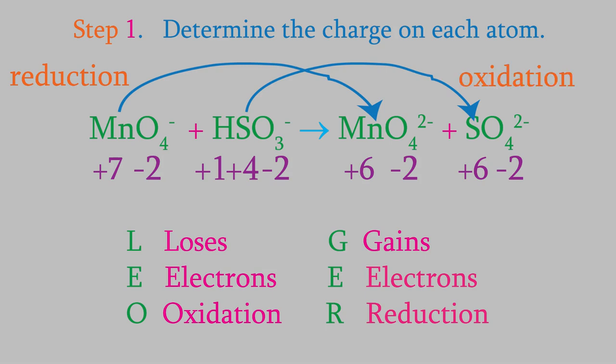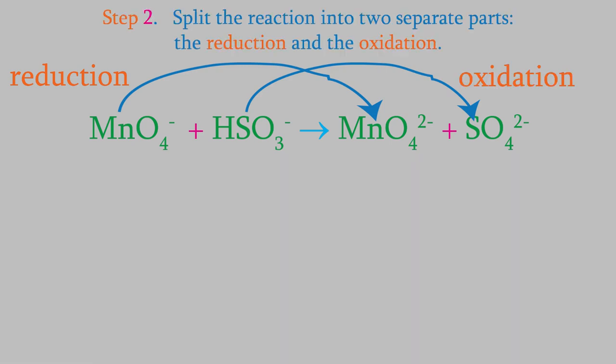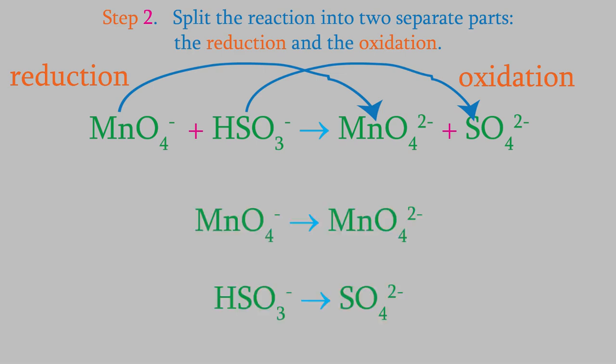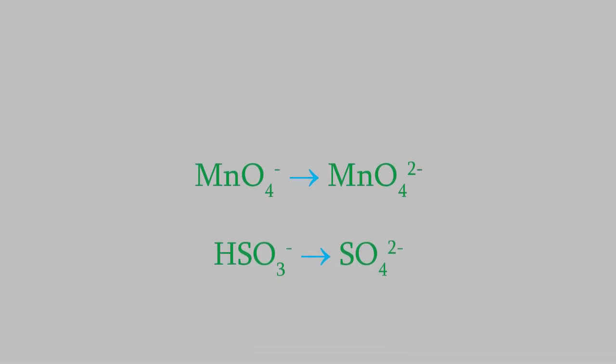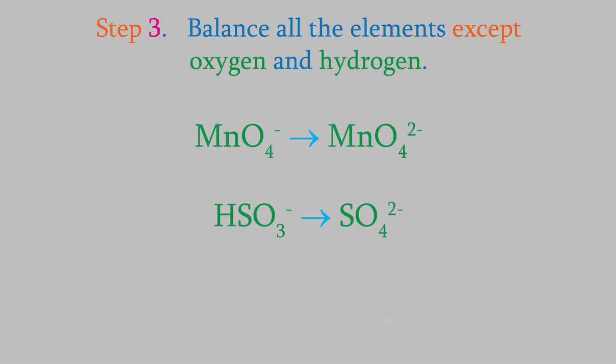Now we move on to step 2, in which we split the reaction into two half-reactions — one for the reduction and one for the oxidation. Now we do step 3, in which we balance all the elements aside from the oxygen and hydrogen. In this case, the other elements are manganese and sulfur, and these are already balanced.